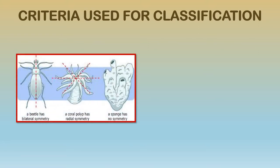Studying the criteria used for classification, we first come to symmetry with three types. The first is bilateral symmetry, as shown by the cockroach — if divided from the center by an imaginary axis, we get two equal halves. The second is radial symmetry, where a cylindrical organism can be divided into two equal halves along any axis. And animals like sponges and amoeba have no proper shape, so any axis will not give two equal halves — that is asymmetry.